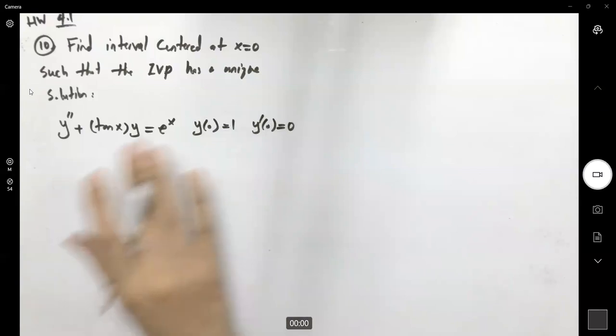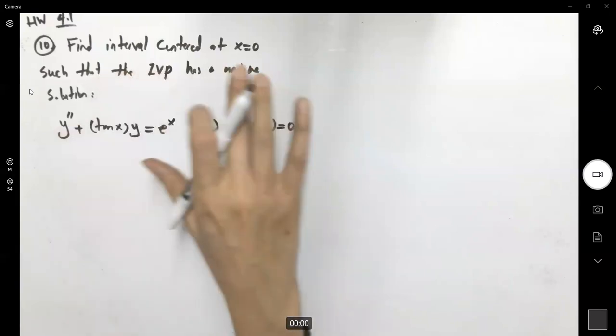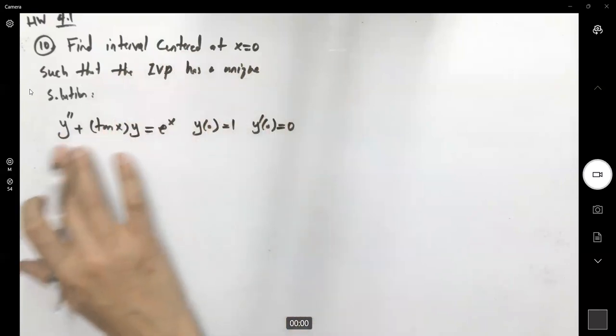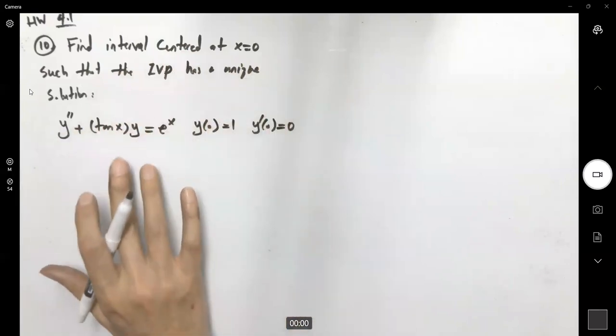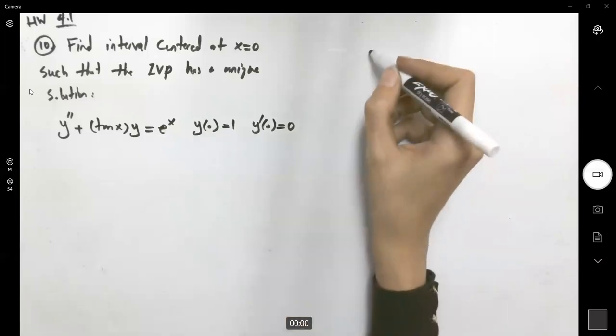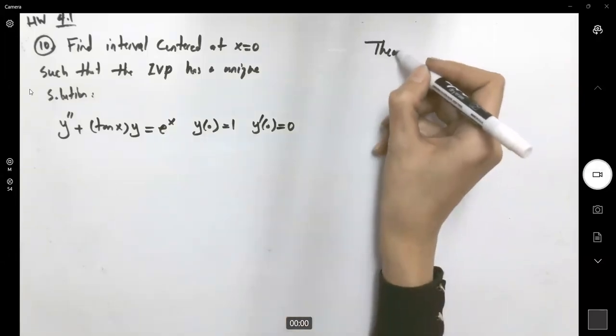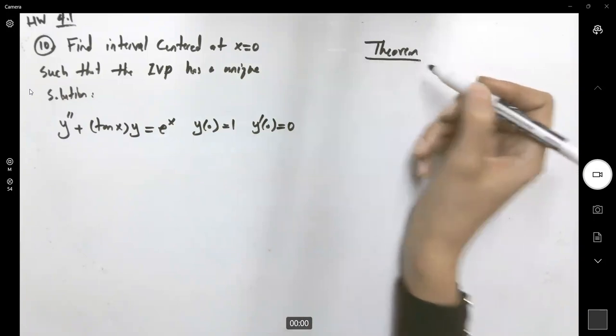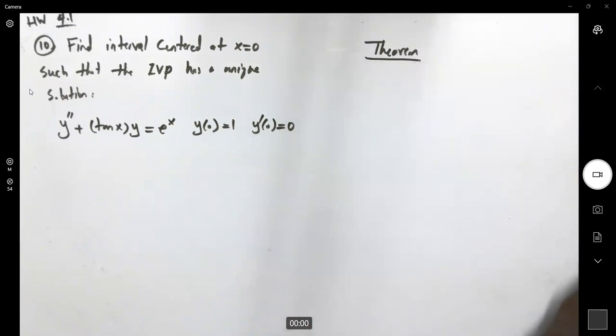We need to find the interval around zero such that this differential equation has a unique solution. Let's go back to the theorem about having a unique solution for initial value problems.